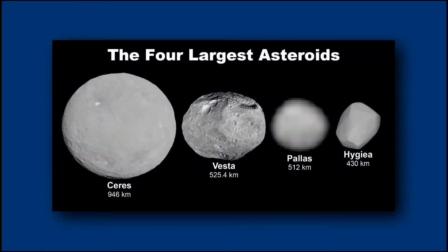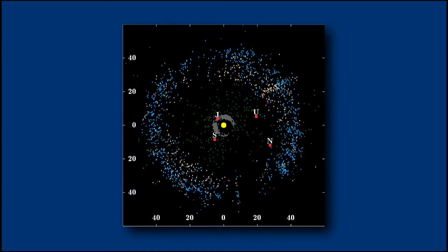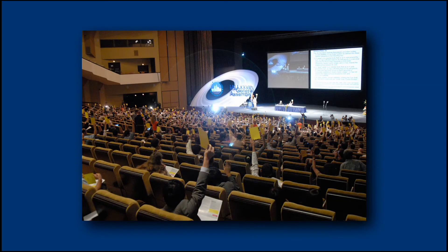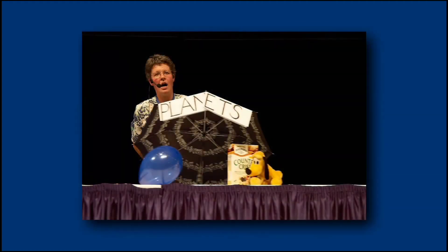Ceres, Pallas, Juno, and Vesta lost their planet status after the discovery of many other asteroids. Similarly, objects increasingly closer in size to Pluto were discovered in the Kuiper Belt region. The debate came to a head in August 2006 with an IAU resolution that created an official definition for the term planet.